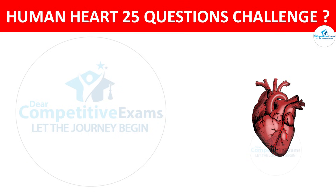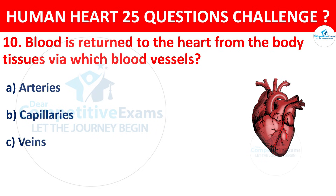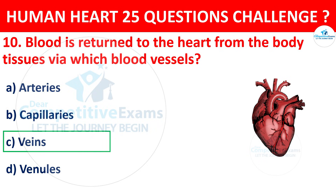Question number 10. Blood is returned to the heart from the body tissues via which blood vessels? Options: Arteries, Capillaries, Veins, or Venules. The correct answer is C, that is Veins.